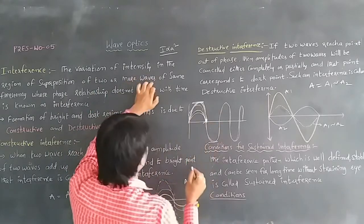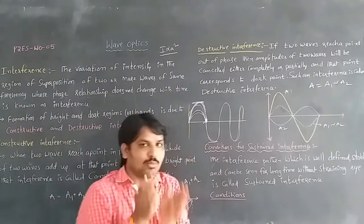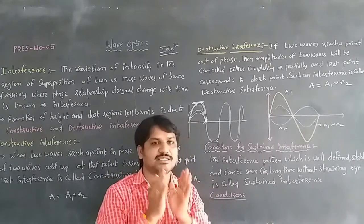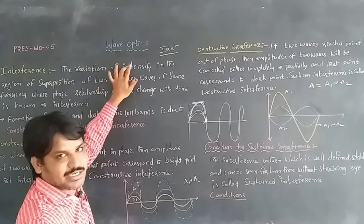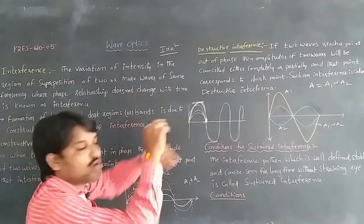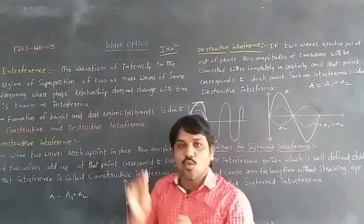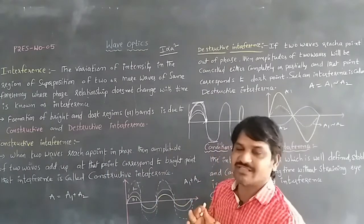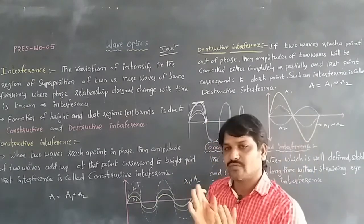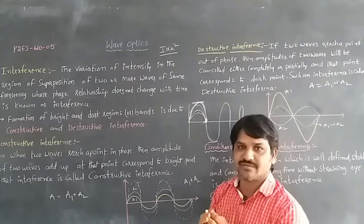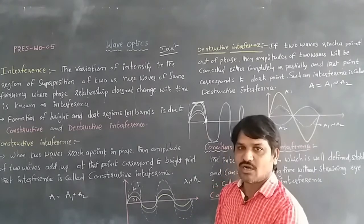We can take more waves also. Two or more waves of same frequency whose phase relationship does not change with time — both waves should have the same phase difference, and it should not change with time. This variation of intensity in the region of superposition of two or more waves of the same frequency, whose phase relationship does not change with time, is called interference.